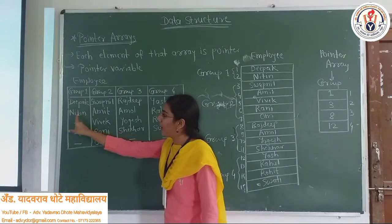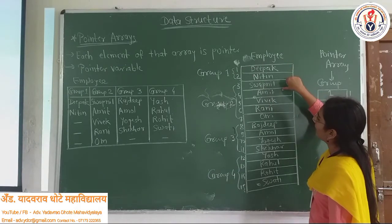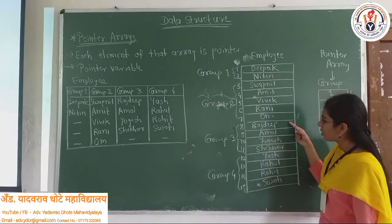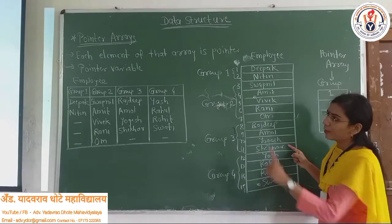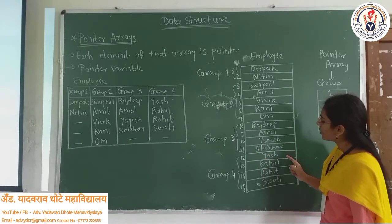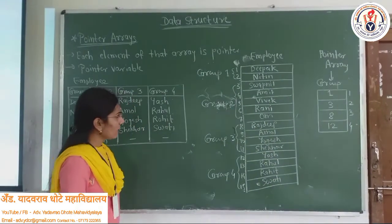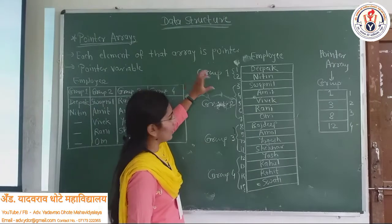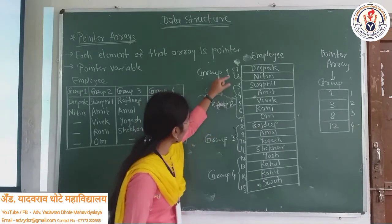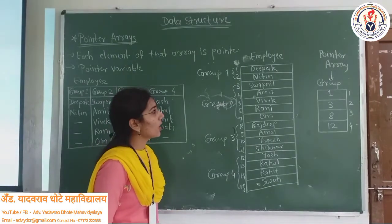You will see the employees sequentially written here. Here you can see Deepak, Nikki, Vipa, Viti, then Sopni, Amit, Vivek, Rani, Om — yeh Group 2 ke members hai. Uske baad Rajdin, Amol, Yogesh, Shekhar — yeh Group 3 ke members hai. Then last is Yash, Rahul, Rohit, Swati — these are the members of Group 4. So here I have divided the employees into 4 groups: Group 1, Group 2, Group 3, Group 4, with curly braces to separate them.